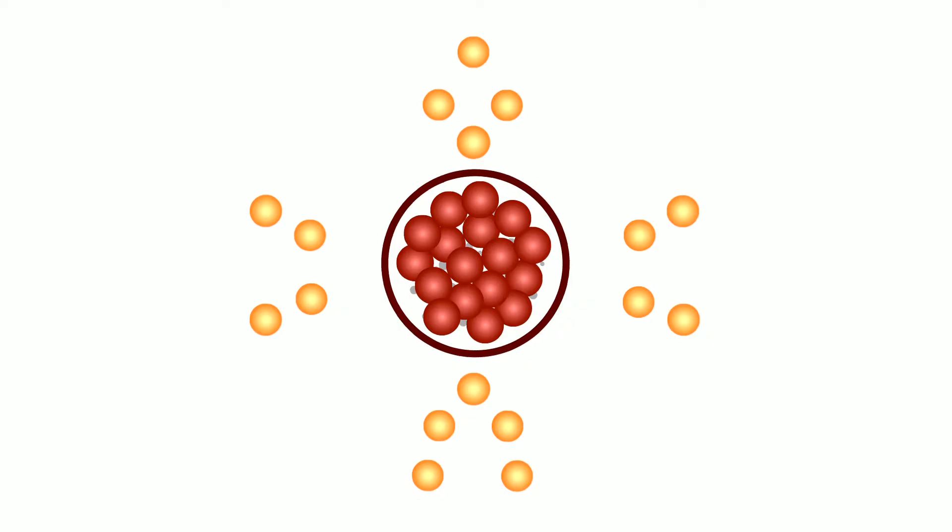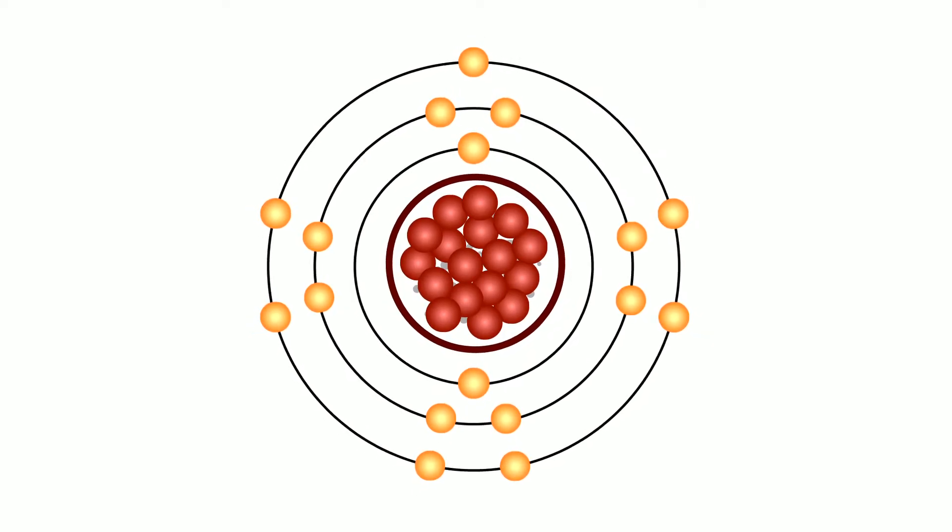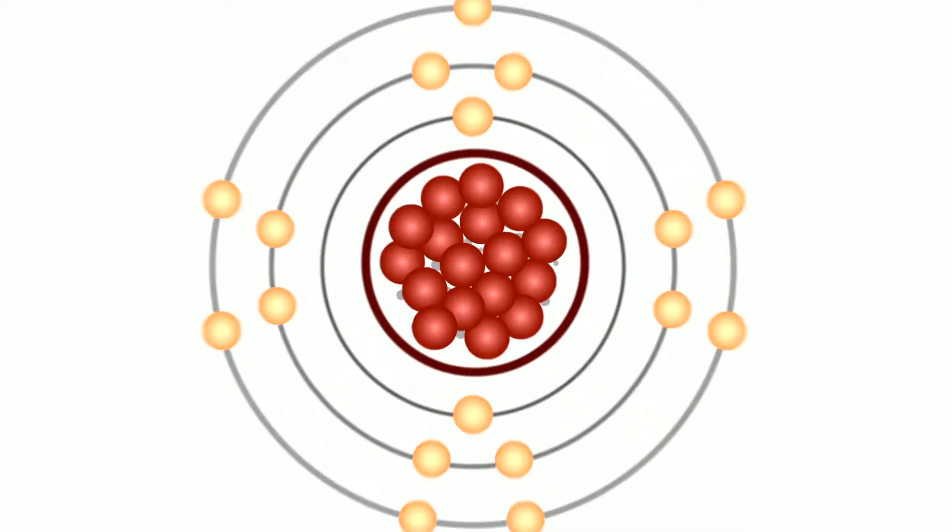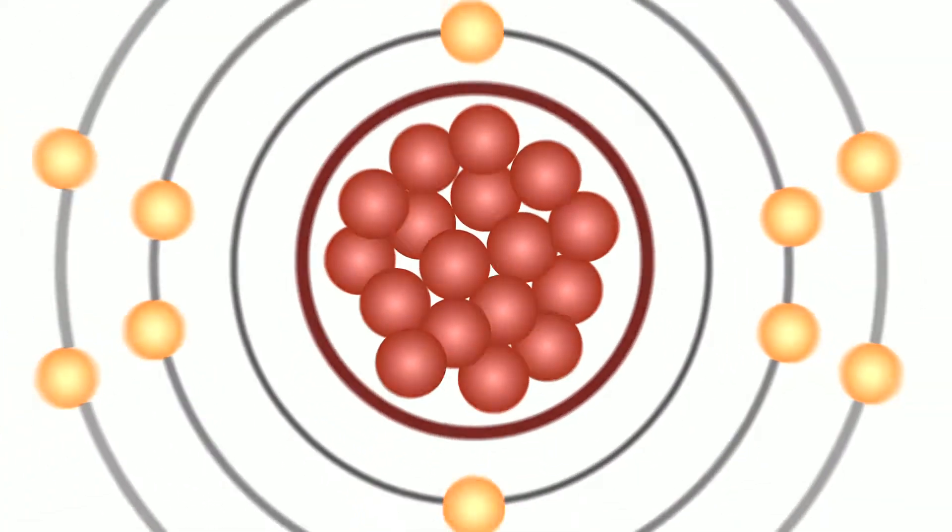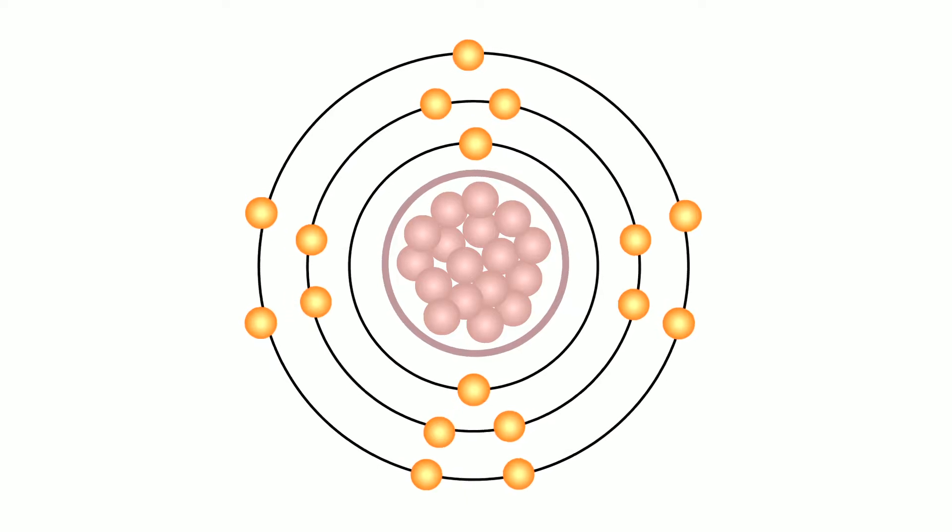A diagram of an atom looks like this: shells surrounding a center, or nucleus. Inside the nucleus are all that atom's protons and neutrons. Moving all around the shells are that atom's electrons.